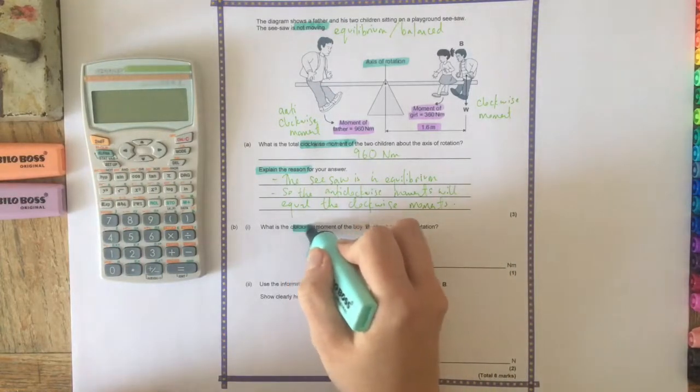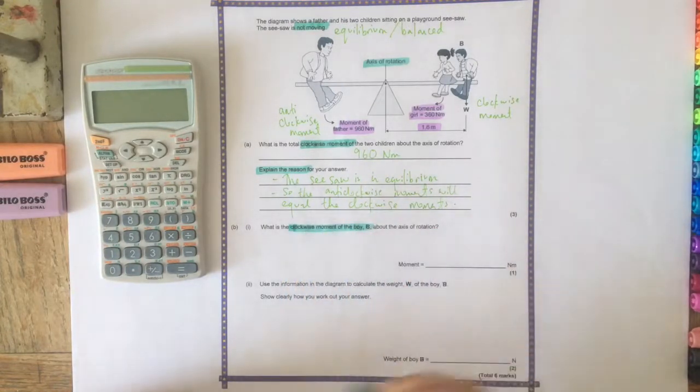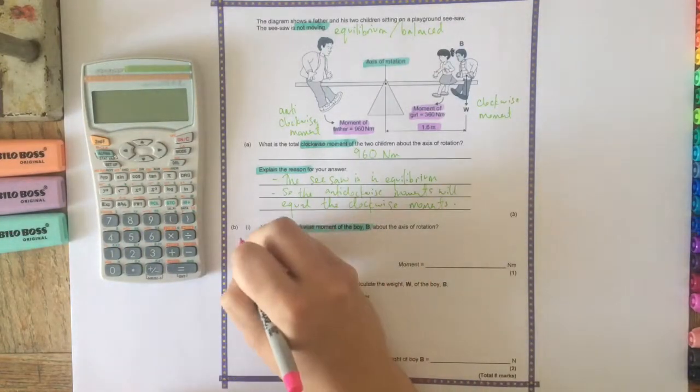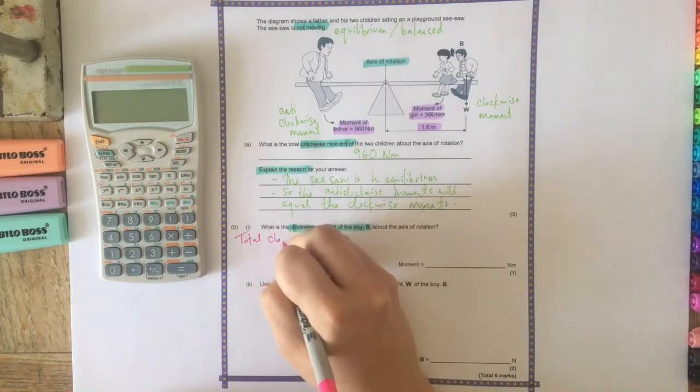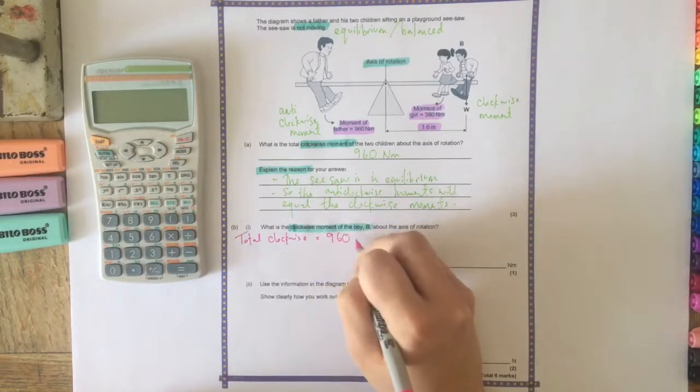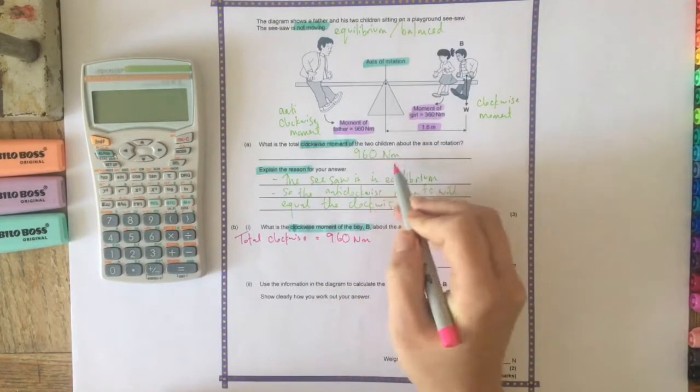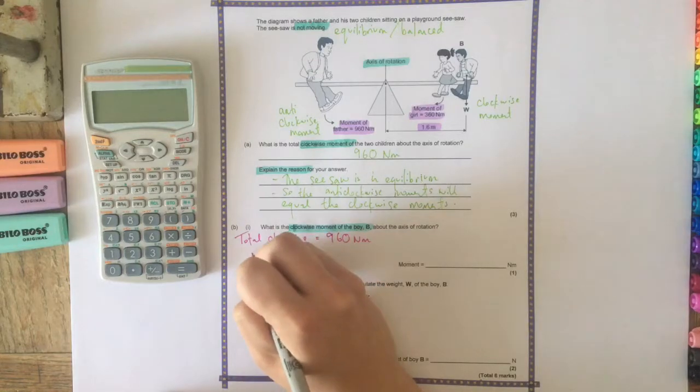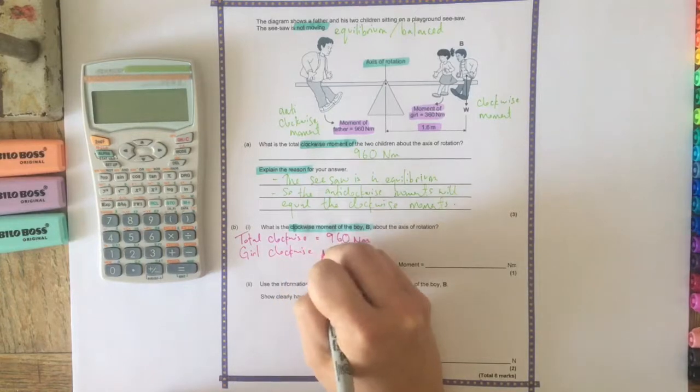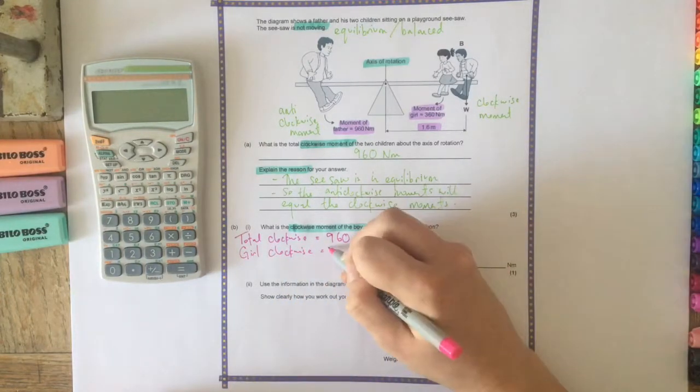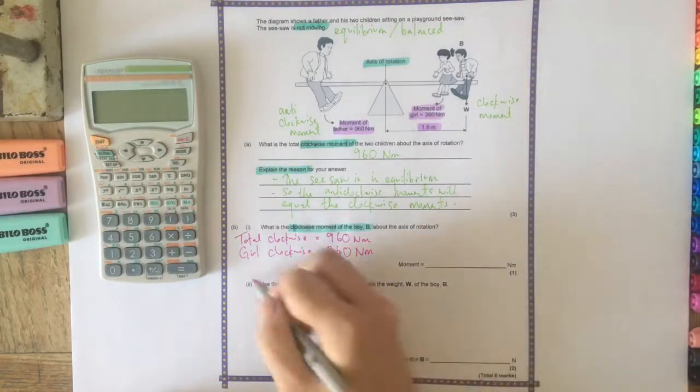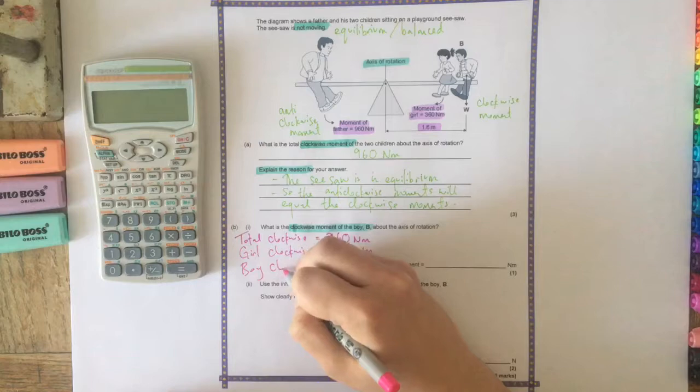So then the next question: what is the clockwise moment of the boy B about the axis of rotation? So let's write out the information that we know. We know that the total clockwise moment is 960 newton meters, because we wrote that here. We know that the girl's clockwise moment is 360 newton meters, because that's given in the diagram, and it asks for the boy's clockwise moment.